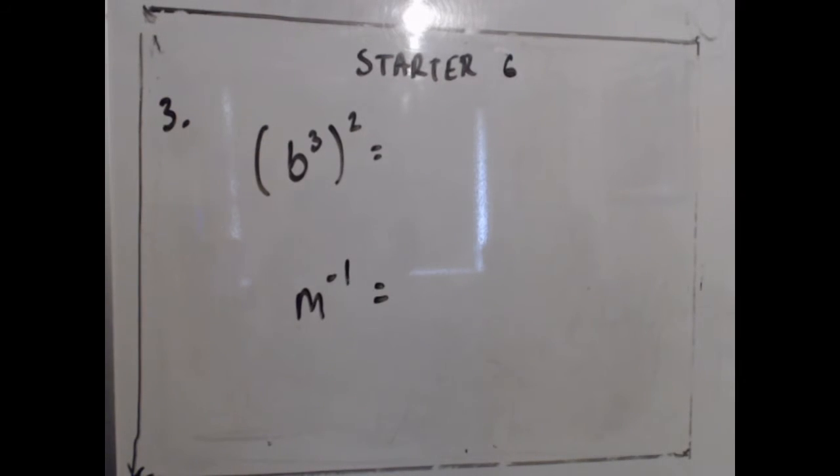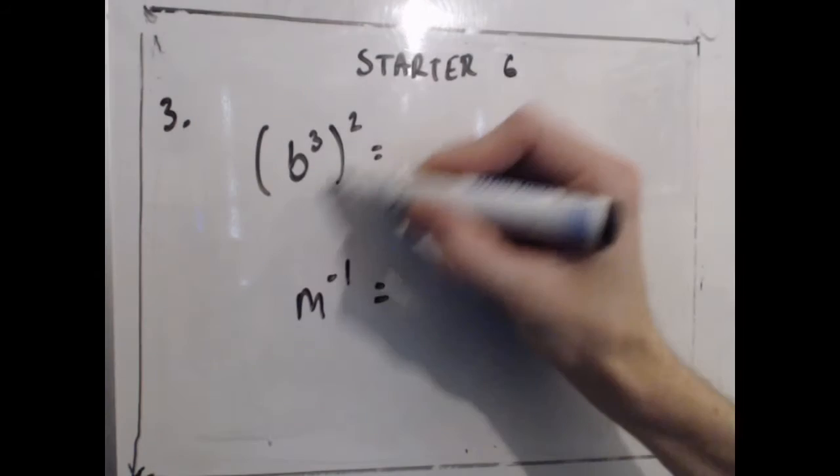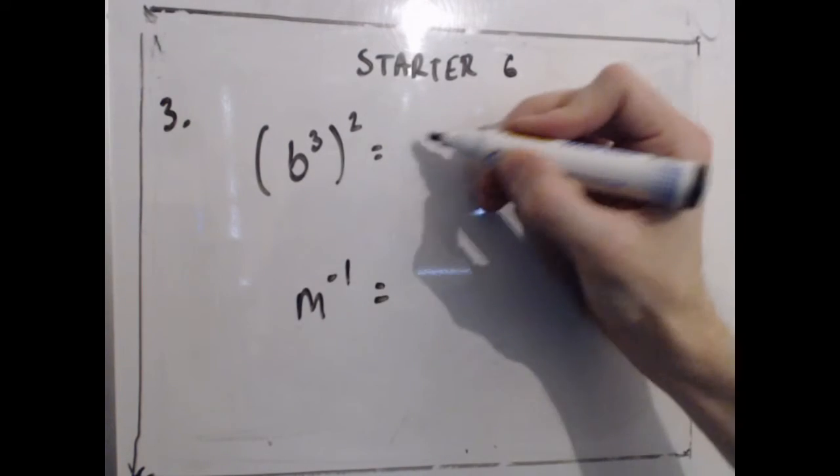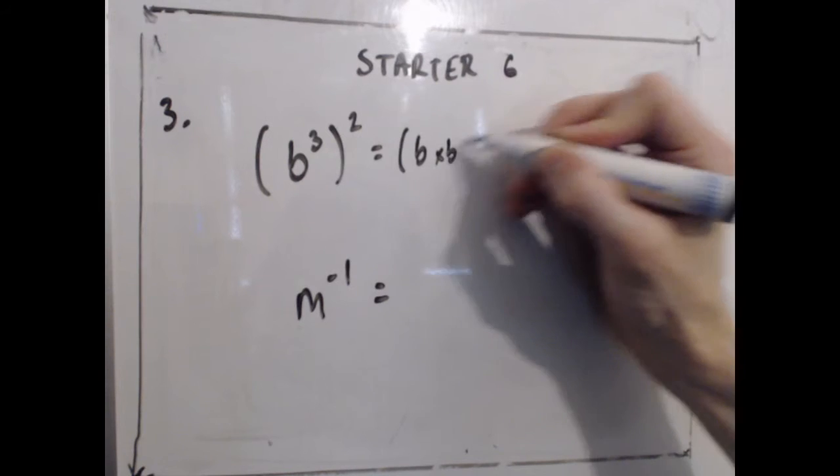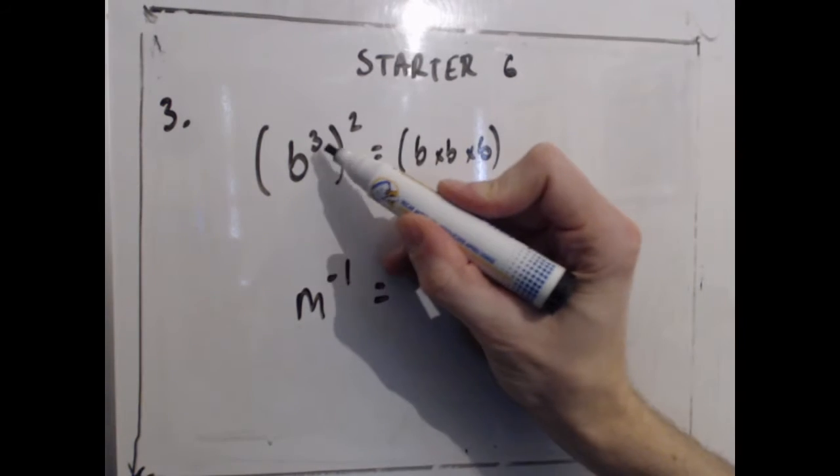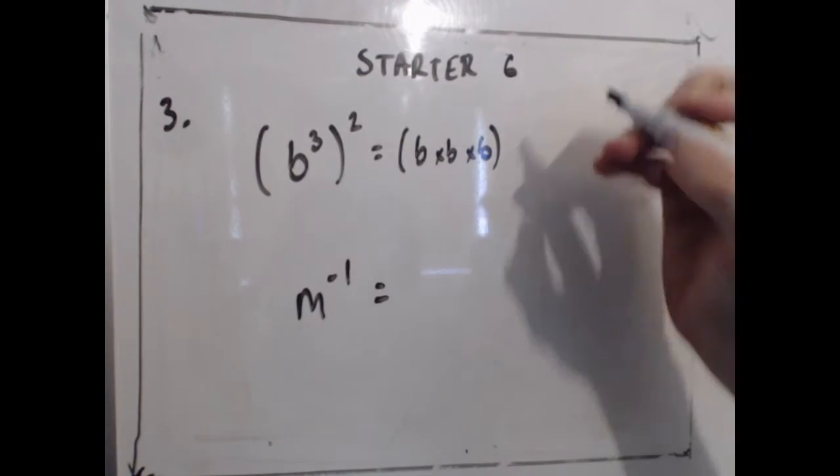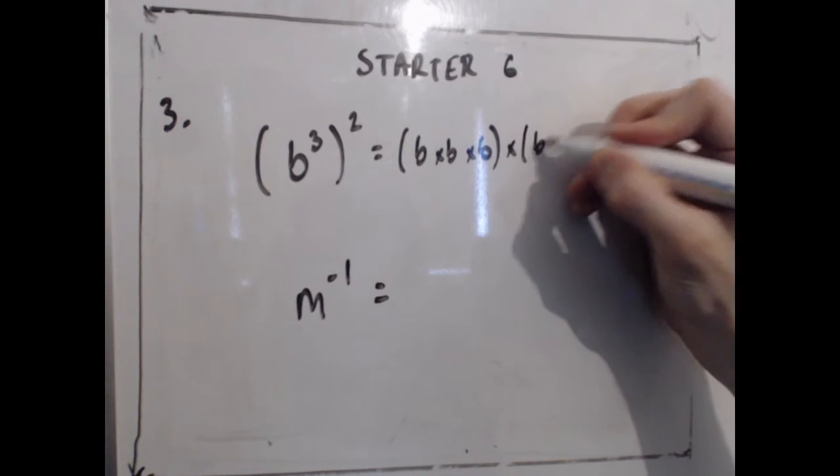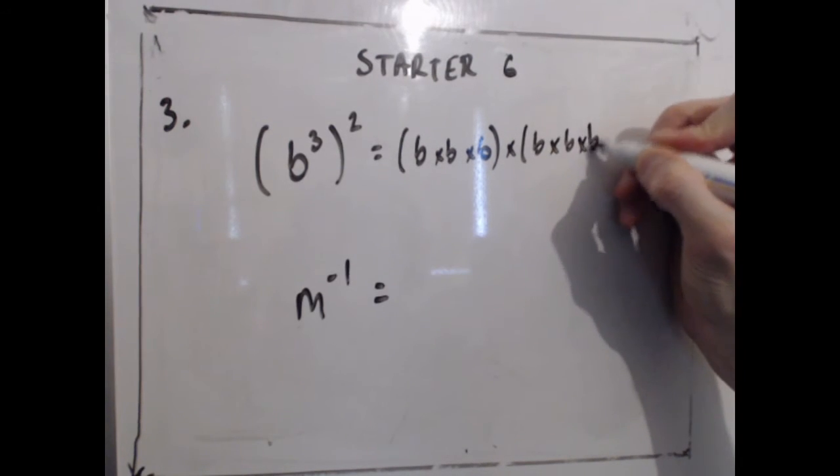The third question, slightly more difficult indices problems here today. We've got one with brackets, and if I wrote this out properly it would be b multiplied by b multiplied by b three times inside the bracket, and I want two of those brackets, so b multiplied by b multiplied by b.